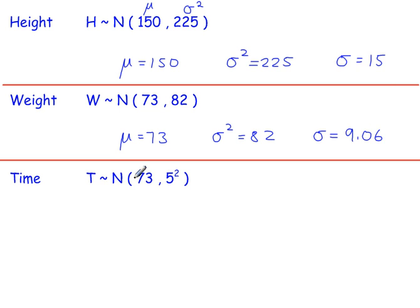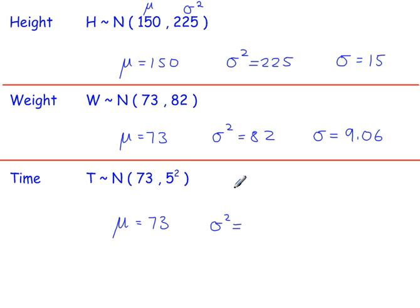In this example, the mean is 73, the variance is 5² which is 25, and the standard deviation is the square root, which is 5.